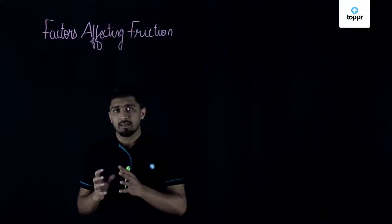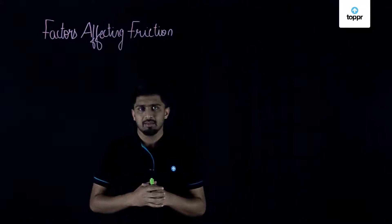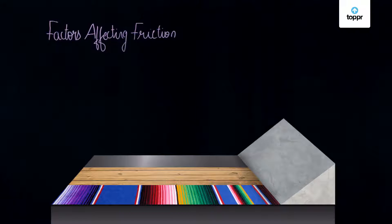So let's start answering one by one by doing a very small experiment. As you can see there are three surfaces. One is smooth, the second one is rough and the third one is a very rough surface. What I'm going to do is place a box and observe how much distance this box will be traveling on these surfaces.